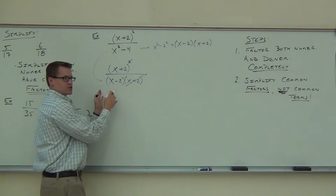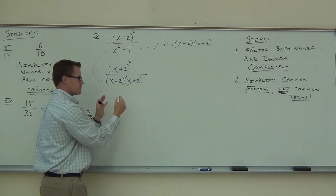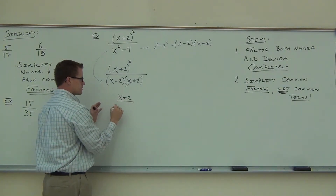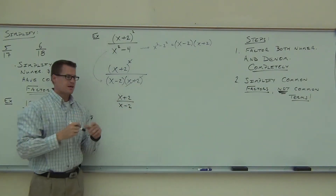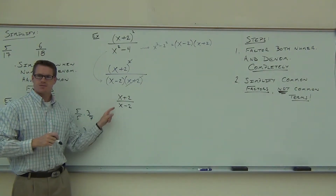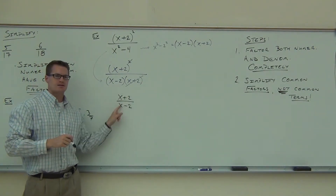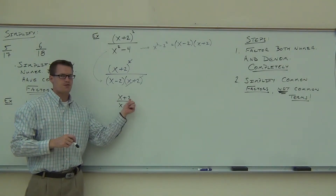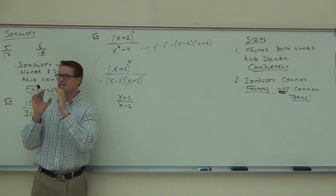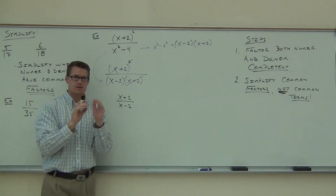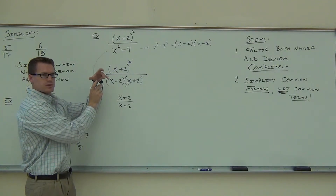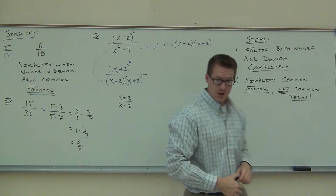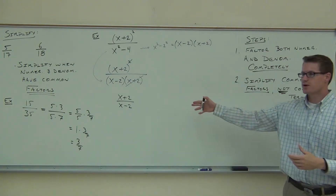Do you all agree that there's an x plus 2 left on our numerator? What's left on our denominator? The important question: can I simplify these x's? No. Do you notice how these are not factors? They're being added and subtracted by that number 2 — these are terms, not factors. Factors will be multiplied. We're completely simplified there: x plus 2 over x minus 2.